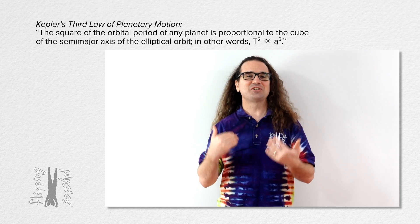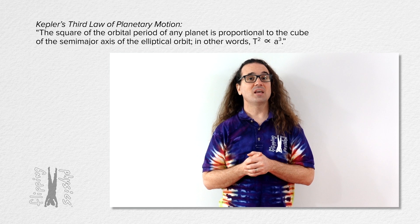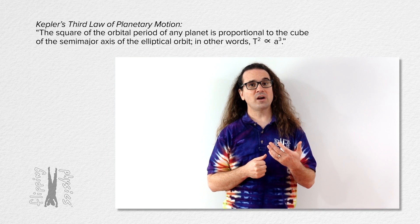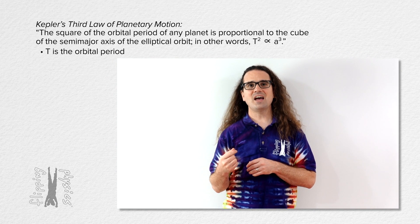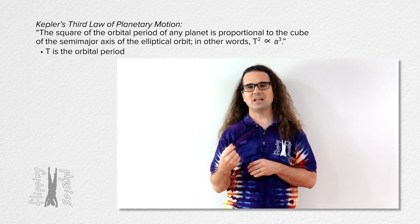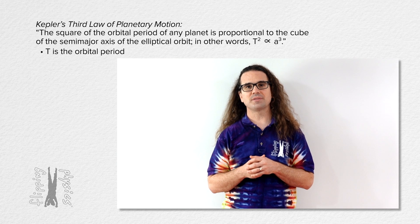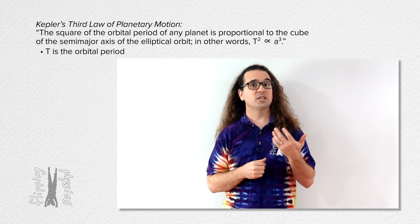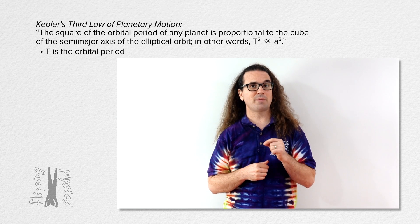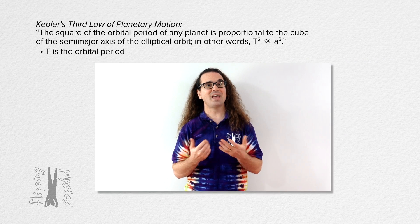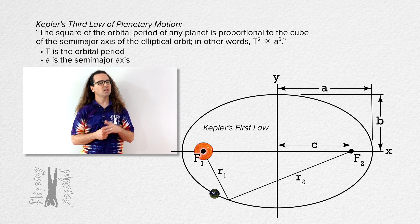To clarify Kepler's third law, it means the square of the orbital period — or the time it takes for a satellite to complete one revolution around the sun — is proportional to the cube of the semi-major axis A, as described in Kepler's first law.